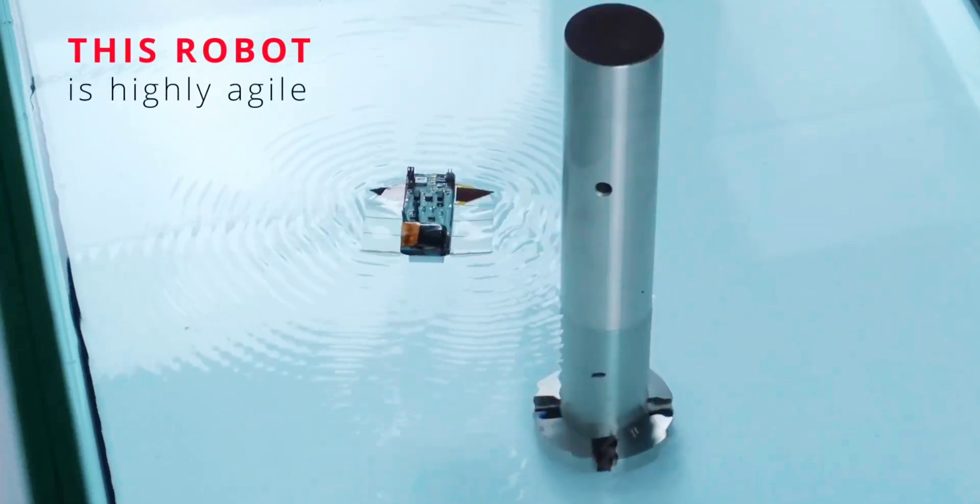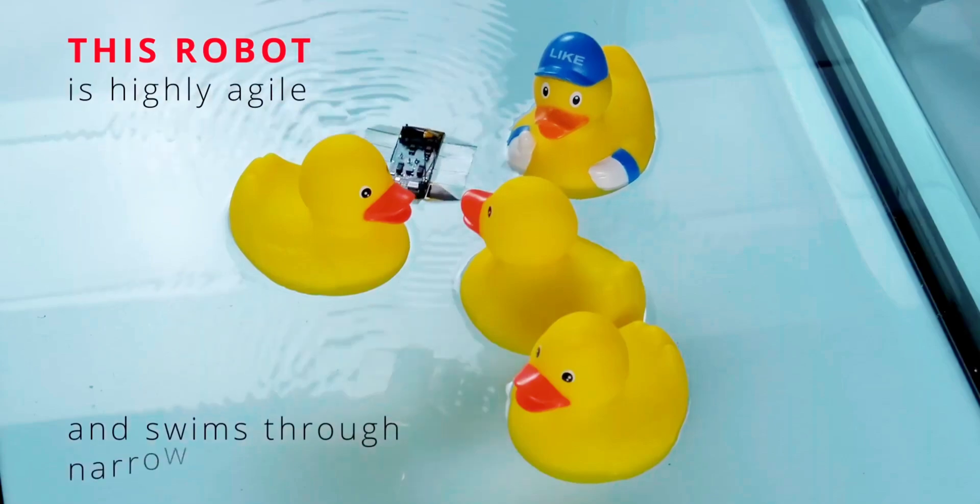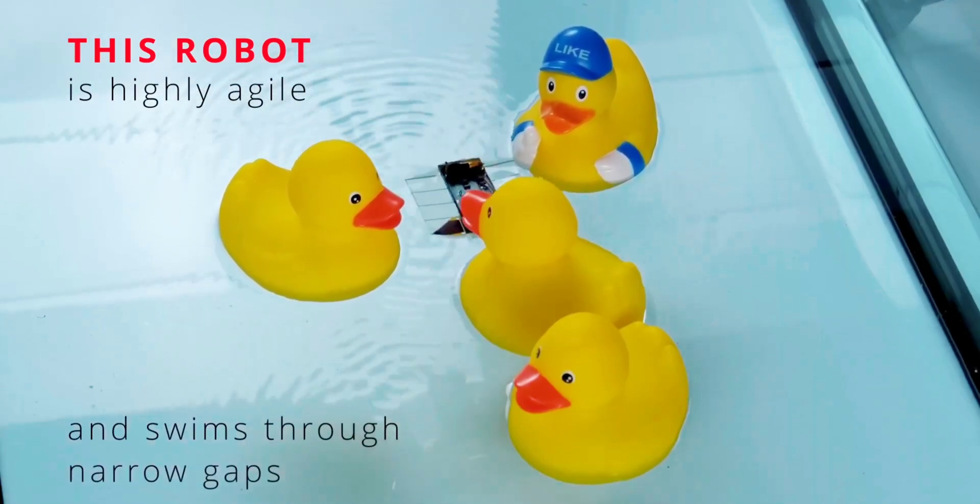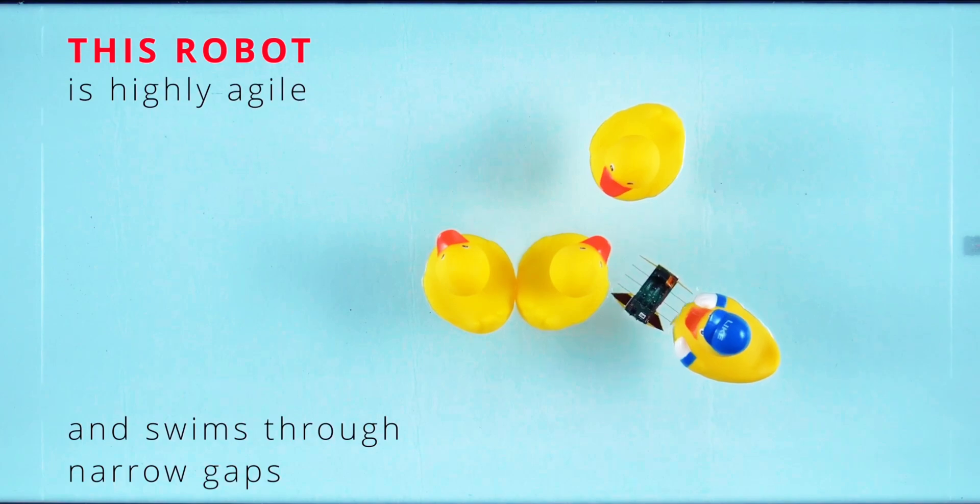If a robot is being used to gather data in sensitive aquatic environments, it shouldn't have a whirring propeller that could harm wildlife or get caught in weeds. A new bot addresses that issue by utilizing a swimming mechanism inspired by flatworms.